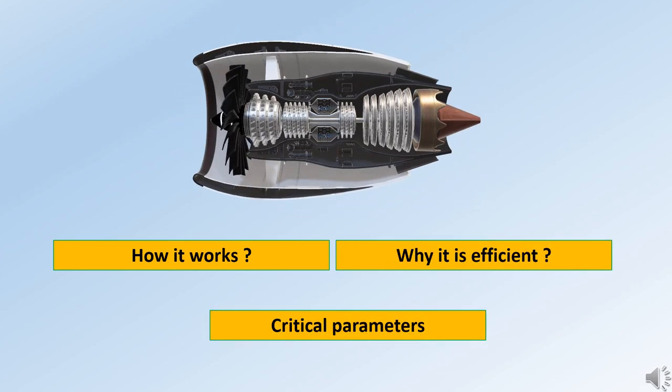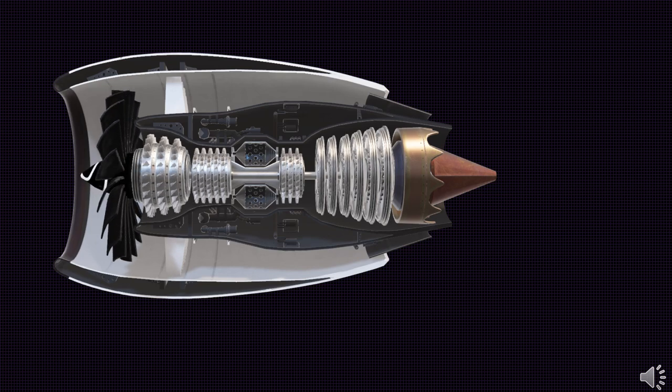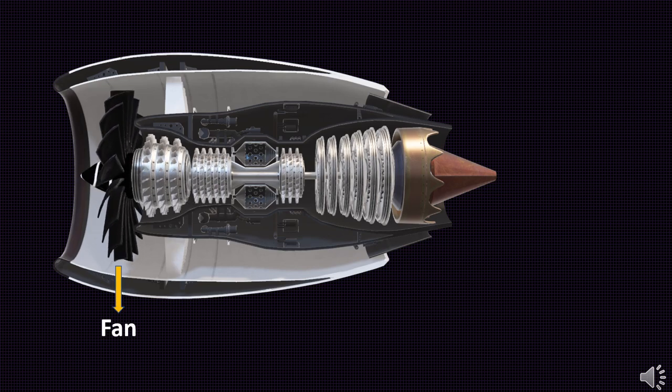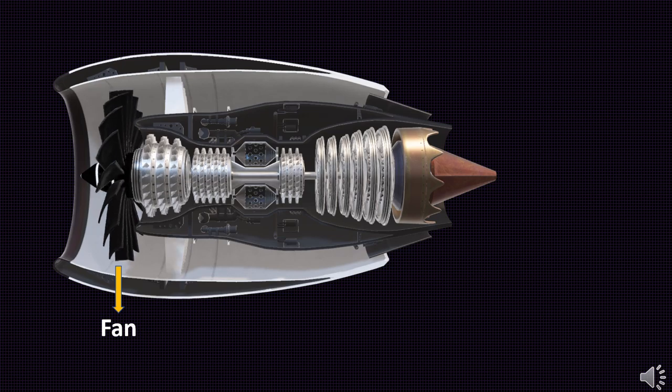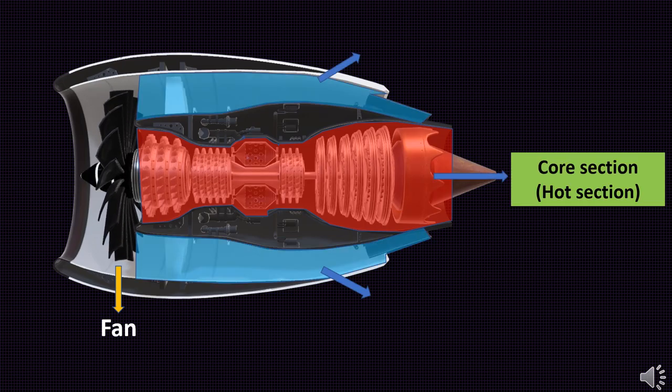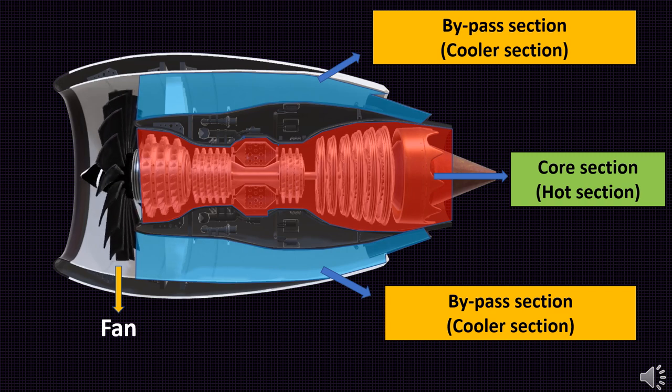The turbofan engine consists of a large fan in front of the engine. The engine is divided into two sections: the core section and the bypass section. The jet engine, on the other hand, has only the core section.